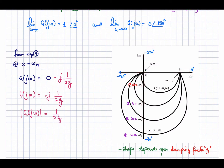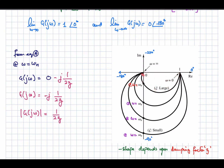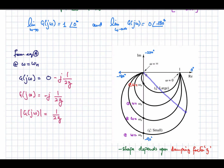The imaginary part of the transfer function is plotted on the imaginary axis and the real part on the real axis. For a quadratic pole, the initial phase is zero when omega equals zero. As frequency increases, the phase gradually changes. At different frequencies we can observe different magnitudes and phases on the polar plot.